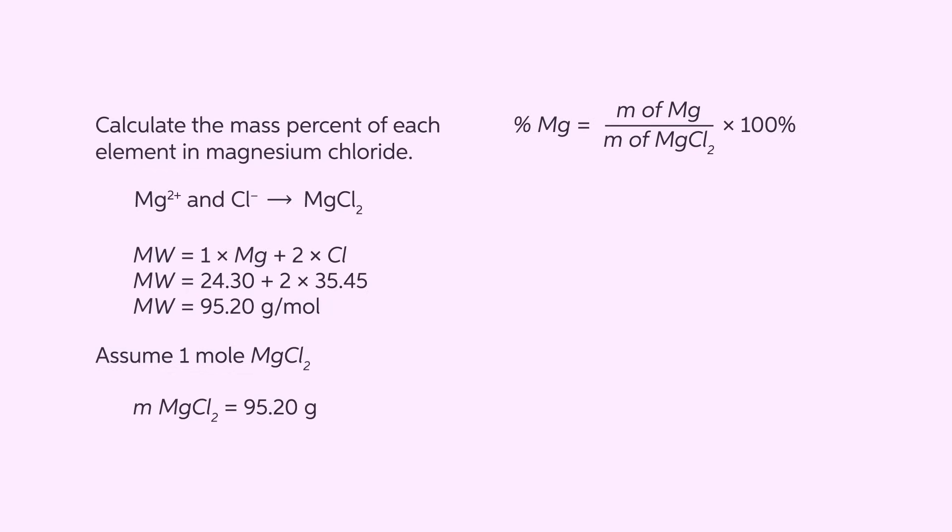To find the mass percent of magnesium, we need the mass of magnesium in one mole of magnesium chloride. Since there is one magnesium atom per formula unit, the mass of magnesium is equal to its atomic mass, or 24.3 grams. Now we can use our mass percent formula, which is mass of magnesium divided by mass of magnesium chloride multiplied by 100 percent. Substituting our masses, we divide 24.30 by 95.20. The mass percent of magnesium is 25.53 percent.